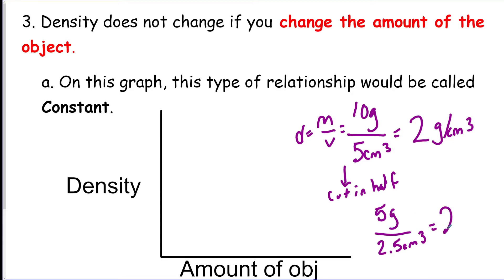And if you were to divide that out you would see it's 2 again, grams per centimeters cubed. So this works halving it, doubling it, tripling it—it doesn't matter. The amount of the object does not matter for density. The density will always stay the same.